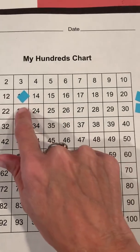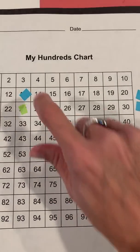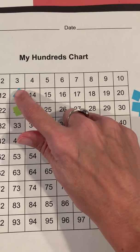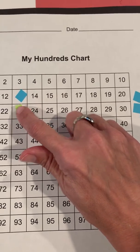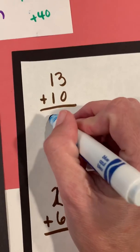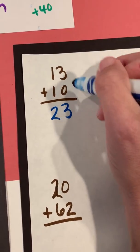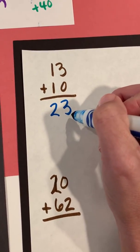So I am now at 23. So 13 plus 10 is 23. An addend plus an addend gives us a sum of 23 here.